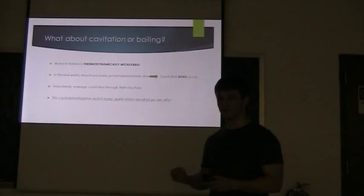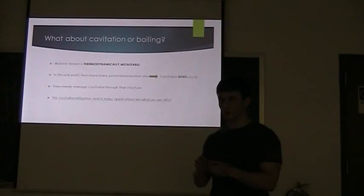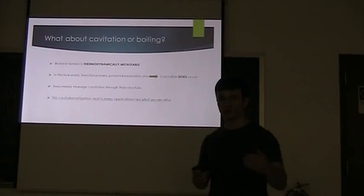The problem with trees is there are bubbles. We know they're there, we know there are imperfections. Cavitation, the growth of those bubbles and breaking the water column, does take place. All the tree does is it controls that cavitation. We're trying to figure out how the tree does that. That's what we're after, and we think we've made some good progress.